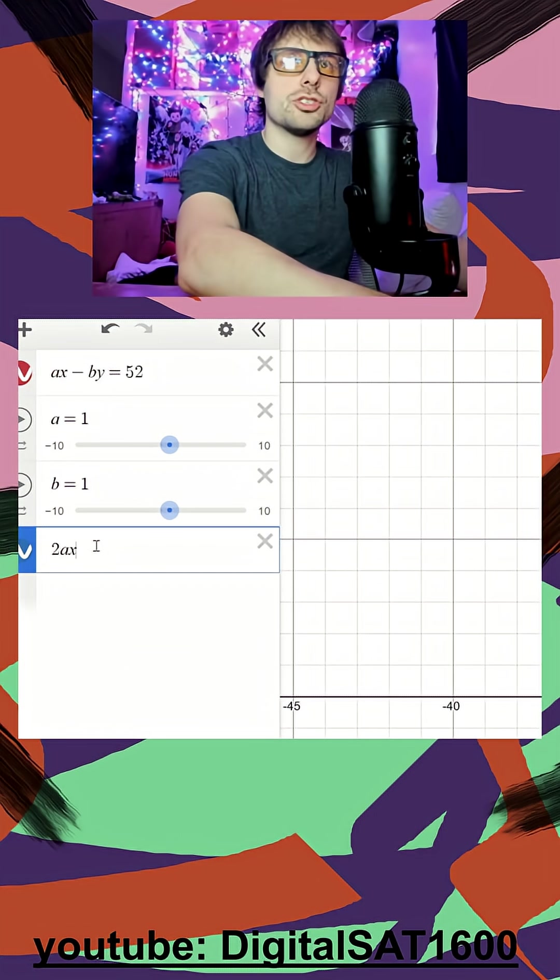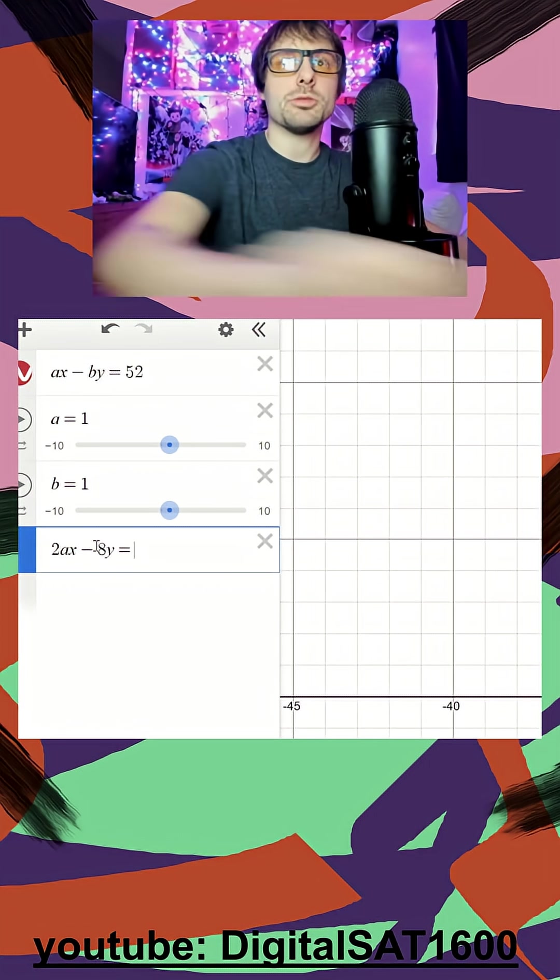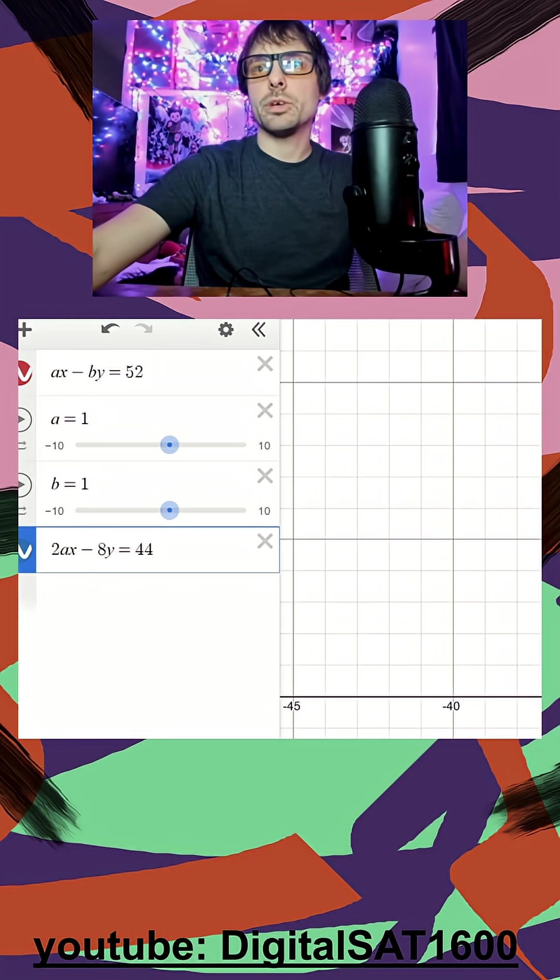And for my second equation, 2ax minus 8y is equal to 44. We'll jump back. We'll get some context now.